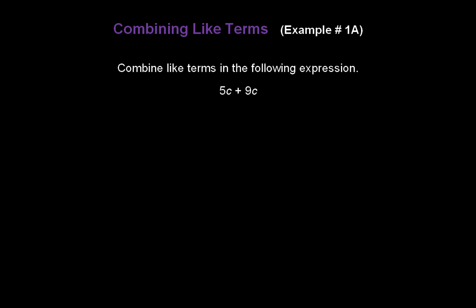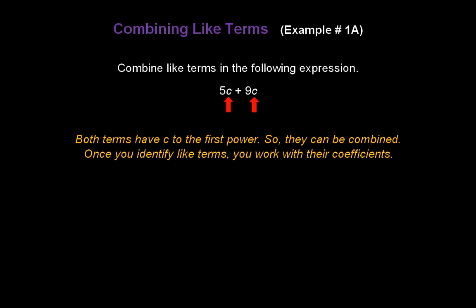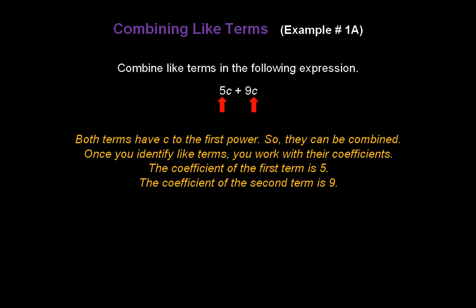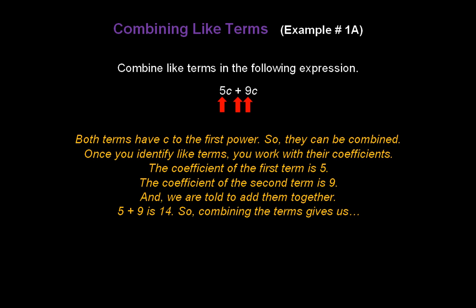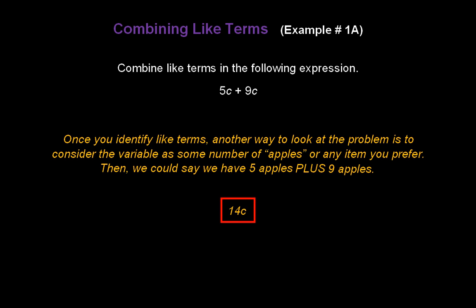Let's combine like terms in the expression 5c plus 9c. Both terms have c to the first power, so we know they can be combined. Once you identify like terms, just work with the coefficients: 5 plus 9 is 14, giving us 14c. Another way to look at it — consider the variable as an item like apples. 5 apples plus 9 apples gives us 14 apples, or 14c.